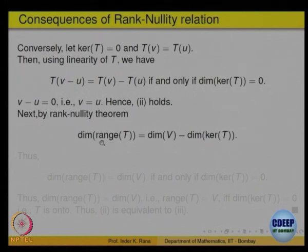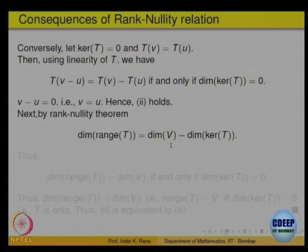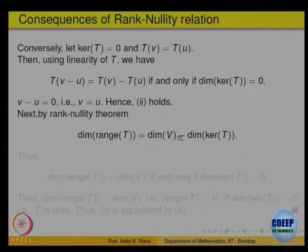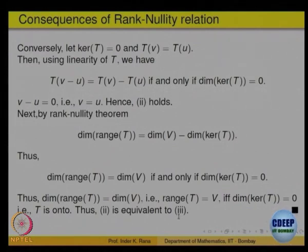That (2) is equivalent to (3) is a direct consequence of the rank-nullity theorem. By the rank-nullity theorem, the dimension of the range equals the dimension of V minus the dimension of the kernel. So the dimension of the kernel is zero if and only if the dimension of the range equals the dimension of V. Since the range is a subspace, that means the range equals the full space. So dimension of the kernel is zero if and only if T is onto — that is, (2) is equivalent to (3).